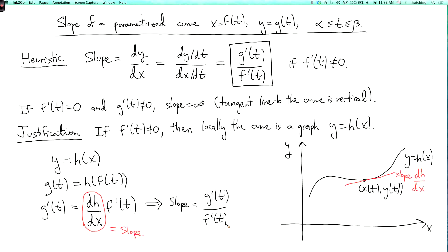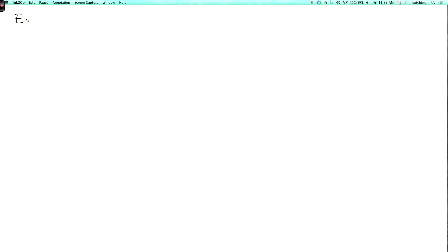Okay, let's do an example where I can use the slope to help sketch a parametrized curve. So my example will be to sketch the curve x equals cosine t, y equals sine t times cosine t, and t goes from 0 to 2 pi. So let's make some room over here to sketch it.